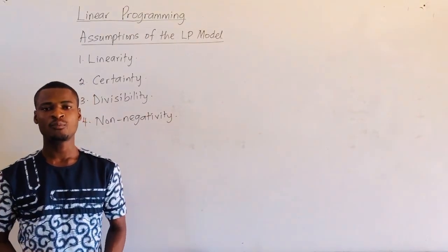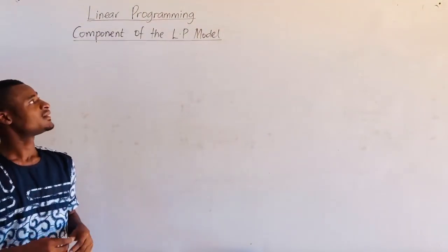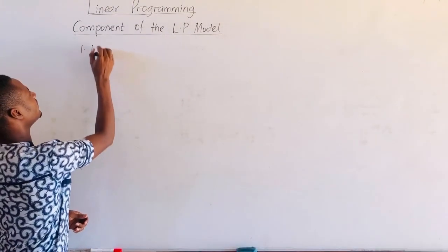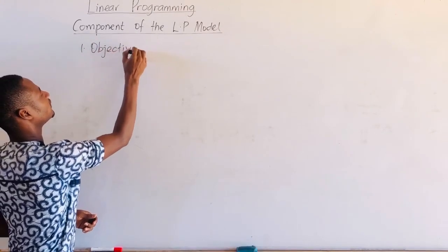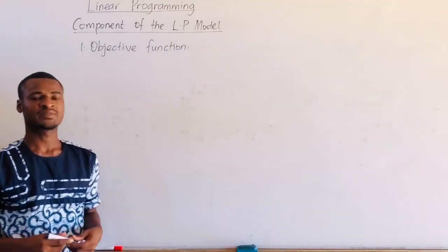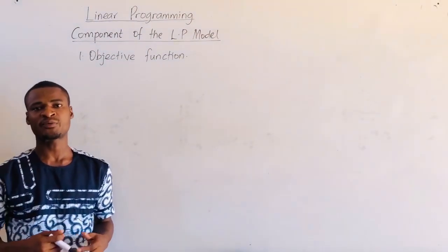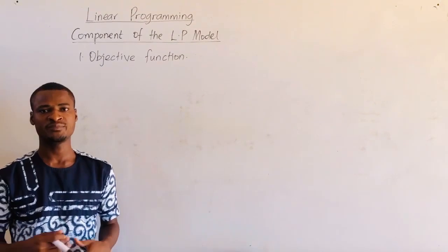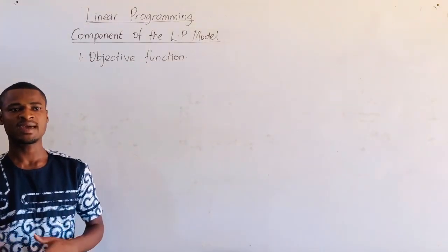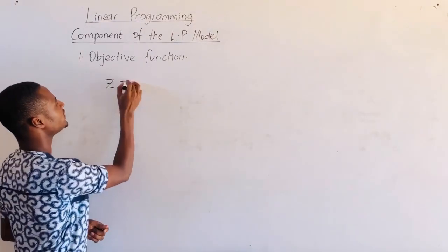Next, we are going to look at the components of the linear programming model. The linear programming model has three main components. The first is the objective function, and this is a function of the item to be optimized. This may be a profit to be maximized or a cost to be minimized. Generally, if there are x1, x2, x3, up to xn decision variables, then the objective function z will be equal to...